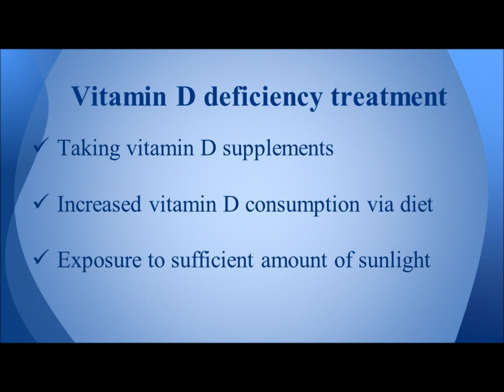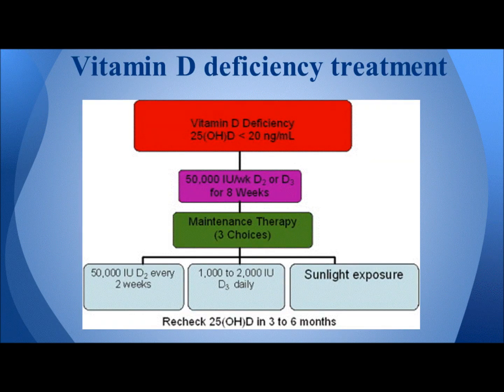Many people think that because Saudi Arabia has abundant sunshine, its inhabitants would not suffer from vitamin D deficiency. This however is not the case. In fact, Saudi Arabia has one of the world's highest vitamin D deficiency rates, at about 90 percent of its inhabitants. To treat vitamin D deficiency, the best three options are taking vitamin D supplements, increasing vitamin D consumption via diet, and exposure to a sufficient amount of sunlight. If a patient has a low vitamin D count of 20 nanograms per milliliter or less, they must either take 50,000 international units every two weeks, or 1,000 to 2,000 international units daily, or be exposed to sufficient sunlight daily.